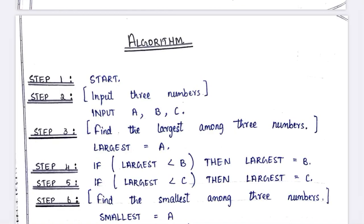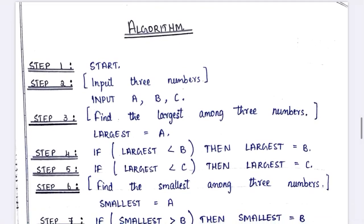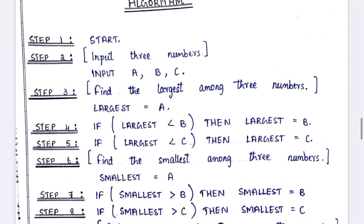Out of these three numbers we have to find out which is the largest. Here you can see the algorithm. The first step is start. The next step is input — we are going to input three numbers: a, b, c. To find the largest among the three numbers, that is the third step — initially we are going to consider a as largest, so largest is equal to a.